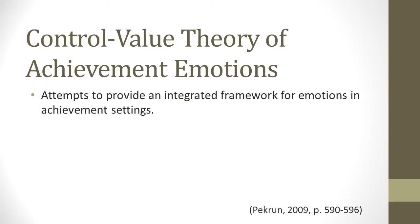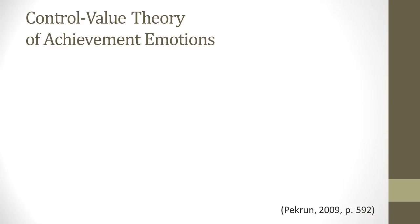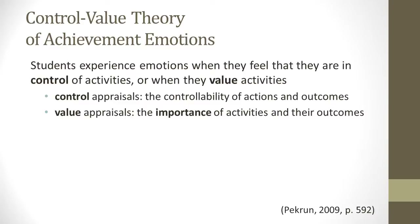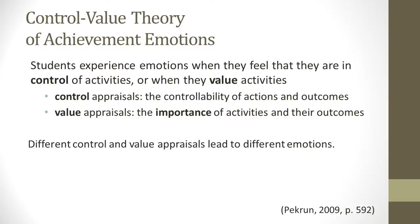Because the research related to emotions in academic settings has been lacking and fragmented, Pekrun and his colleagues have tried to develop a more integrated framework — the Control Value Theory of Achievement Emotions. The central part of this theory is that students experience emotions when they feel that they are in control of activities or when they value activities. Control appraisals refer to the controllability of actions and outcomes, and value appraisals relate to the importance of activities and their outcomes. Different control and value appraisals lead to different emotions.